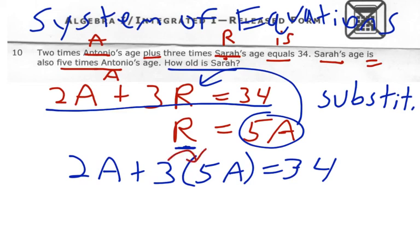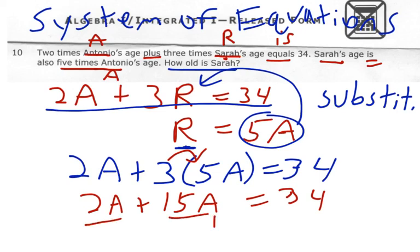So 3 times 5A gives me 15A. Bring everything else down. And we have a two-step equation. Our first step now is to combine our like terms. 2A plus 15A is 17A equals 34. And our final step is to divide by 17. And A is going to give us 2.